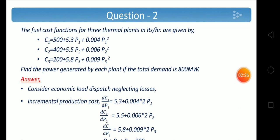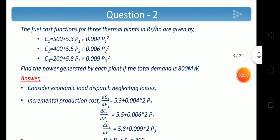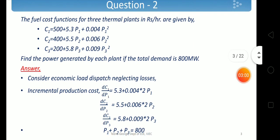The condition is incremental fuel cost should be equal and equal to lambda. We can find dC1/dP1 = 5.3 + 0.008·P1, since d(P1²)/dP1 = 2P1. Similarly, dC2/dP2 = 5.5 + 0.006·(2P2), and dC3/dP3 similarly. Also, it is given that power demand is 800 MW, which has to be met by 3 generating units: P1 + P2 + P3 = 800.